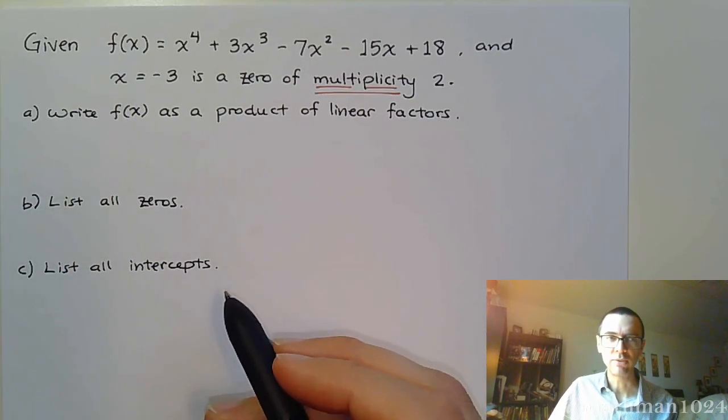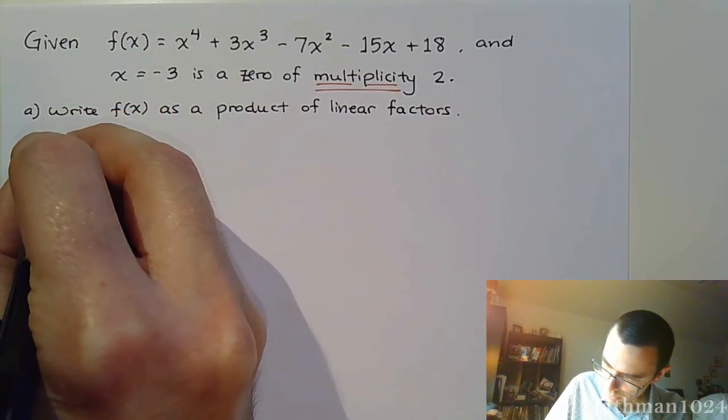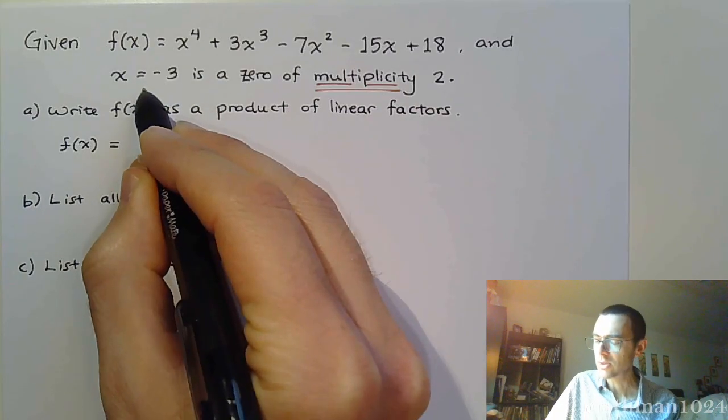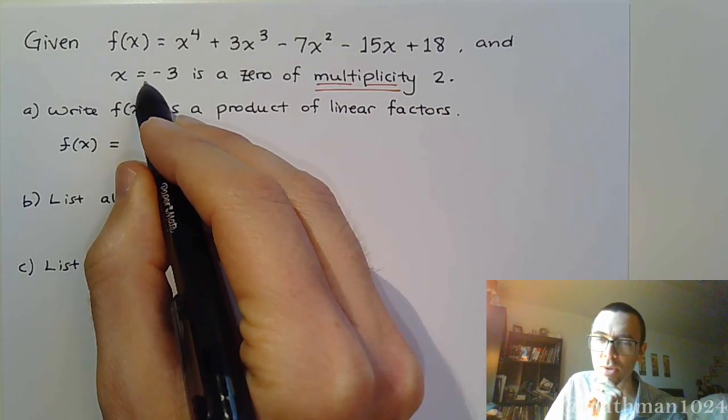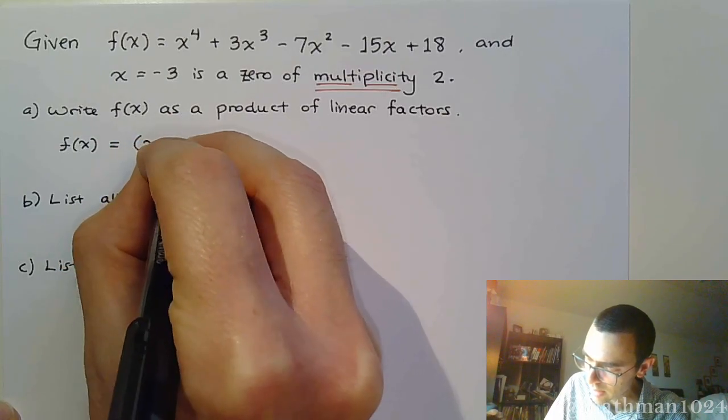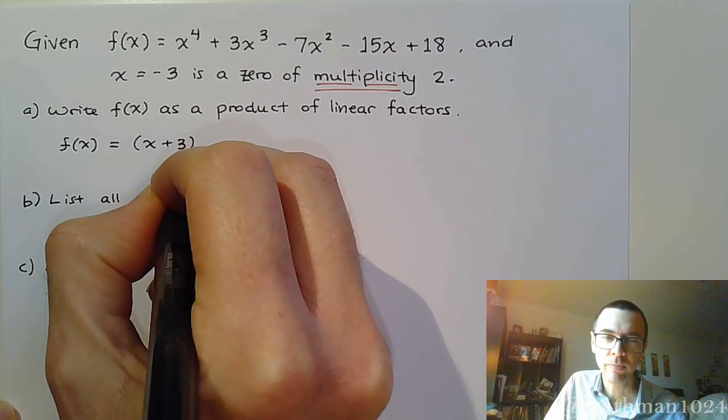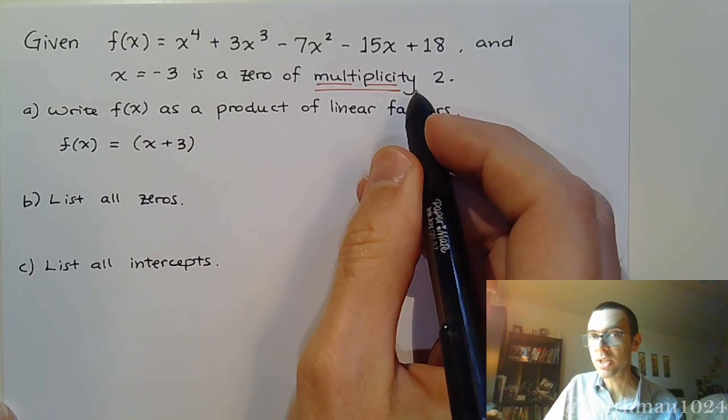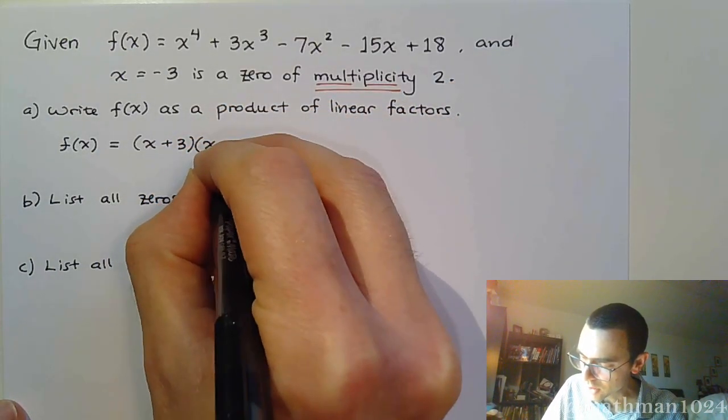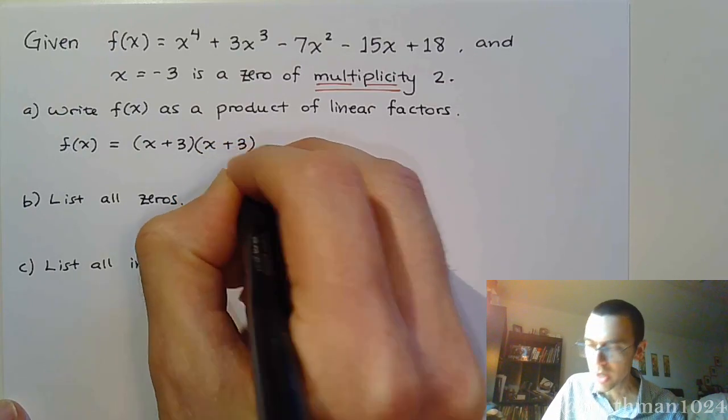Write f(x) as a product of linear factors. Well that means that I know that x minus, let's see this says x equals negative three, so if we go back to the factor, that's coming from the factor x plus three. And since it says it has a multiplicity of two, that means that that factor shows up twice like that.